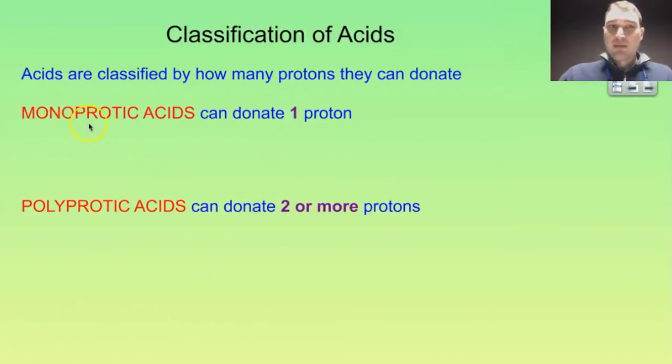Mono means one, protic means proton, so one proton. Poly means many, protic again means proton, so many protons. So monoprotic acid donates only one proton whereas polyprotic acids can donate two or more protons.